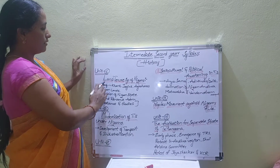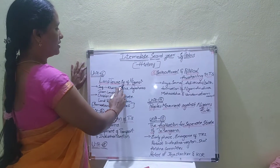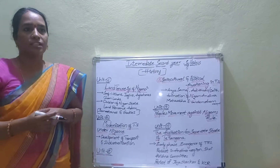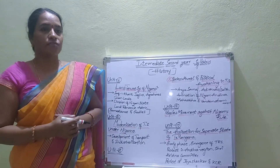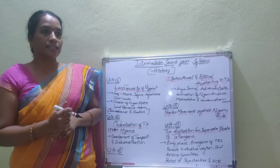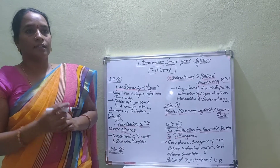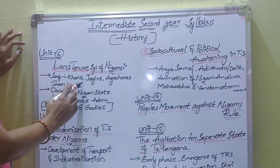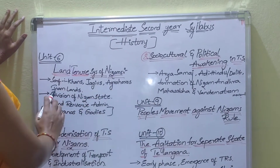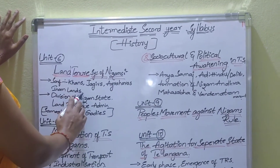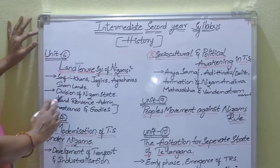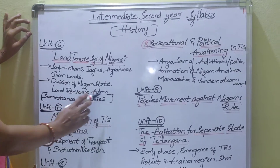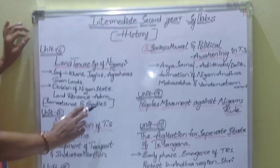The sixth unit is the land tenure system of the Nizams. The land tenure system under the Asapjahis deals with Sarspekas, Jagirs, Agraharas, and Elam Lines. Also covered is the division of the Nizam State, Land Revenue Administration, Samsthanas and Gavis.